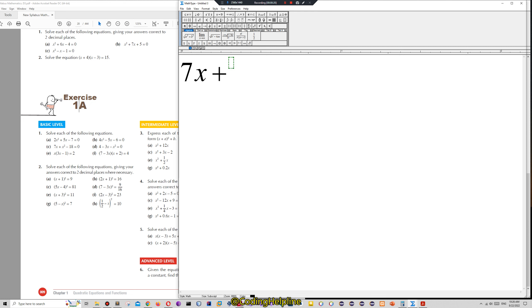We write 7x plus x square minus 18 is equal to 0. This is a quadratic equation and we will use the factorization method. Let's organize the equation with respect to the power of x.